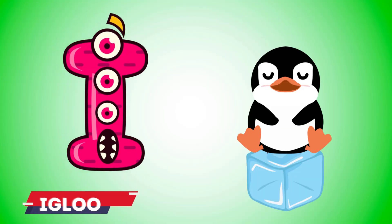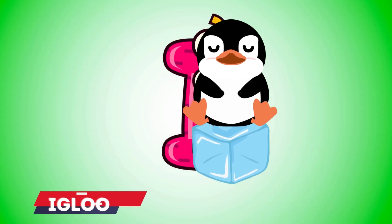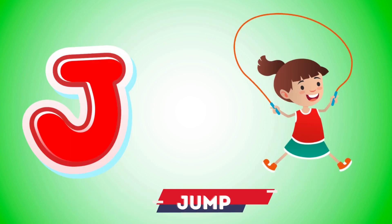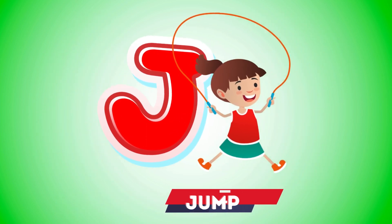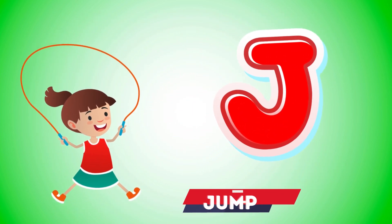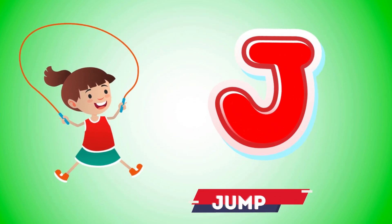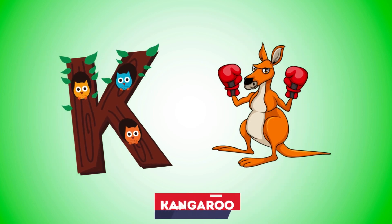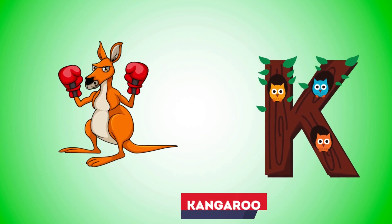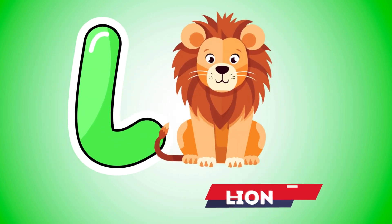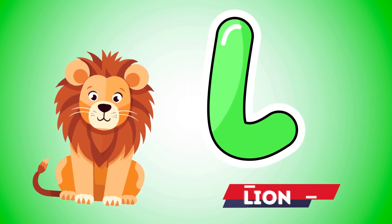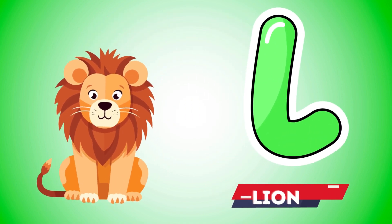I is for igloo, i-i-igloo. J is for jump, j-j-jump. K is for kangaroo, k-k-kangaroo. L is for lion, l-l-lion.